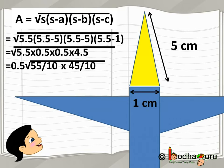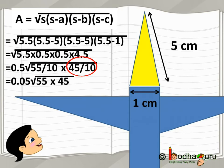Now, finding the square root of decimal is a little tough, right? 5.5 is equal to 55 by 10 and 4.5 is equal to 45 by 10. So, it becomes 0.5 multiplied by square root of 55 by 10 multiplied by 45 by 10.